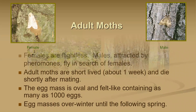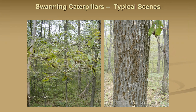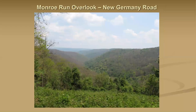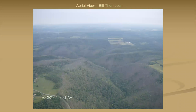This is a photo from 2007 in Garrett County — an outbreak situation where trees are just covered with caterpillars. There were so many caterpillars on one stretch of road that there were smears of dead caterpillars from cars running over them. By July, the forest looked like the dead of winter — completely defoliated. A valley view from New Germany Road shows brown areas on the hillsides — completely defoliated areas. An aerial view taken by Biff Thompson of MDA shows vast areas of defoliation across Garrett County in 2007.